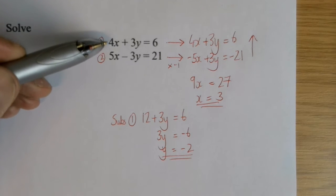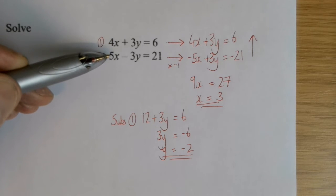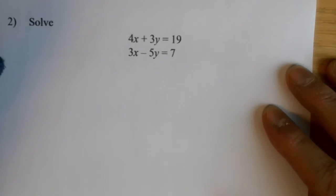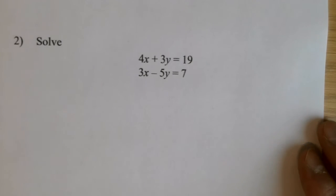Now, of course, I could have gone with the same number of x's. So I could have gone with 20x's. Multiply that one by 5, that one by 4. I would have got the same answer. So with the second one, I am going to go for the same number of x's with this one. It doesn't matter whether you've decided to go for the same number of x's or the same number of y's.